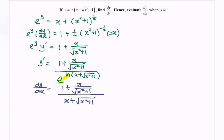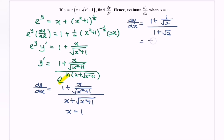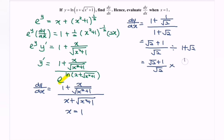Now substitute x = 1. We get dy/dx at x = 1 equals (1 + 1/√2) / (1 + √2). Equating the numerator over a common denominator gives (√2 + 1)/√2, divided by (1 + √2). Rewriting, we have (√2 + 1)/√2 multiplied by 1/(1 + √2). Noticing the common term (√2 + 1), we simplify, and dy/dx = 1/√2.